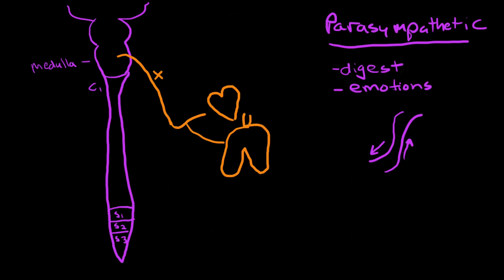But there are other parts of the parasympathetic nervous system as well. There are other nerve branches that carry information to and from the parasympathetic nervous system.